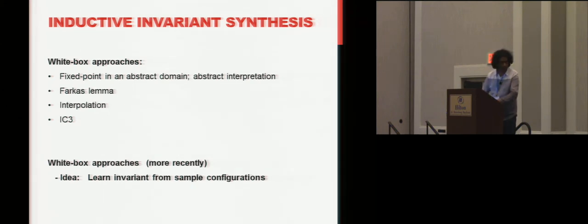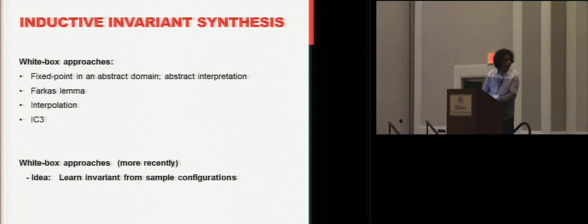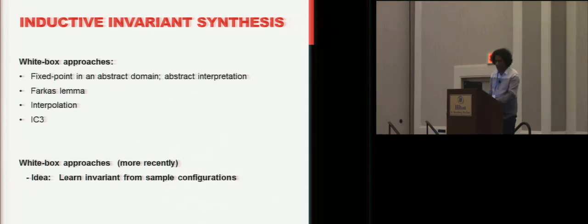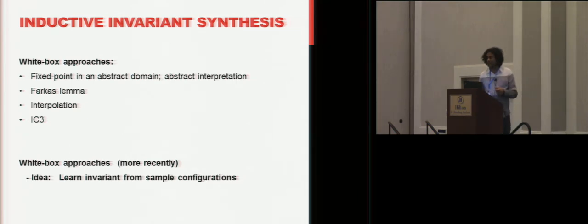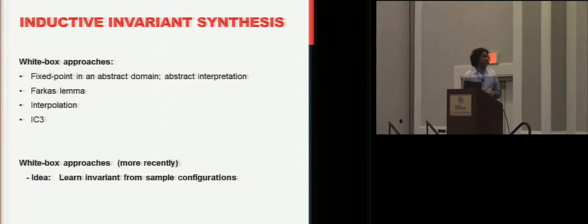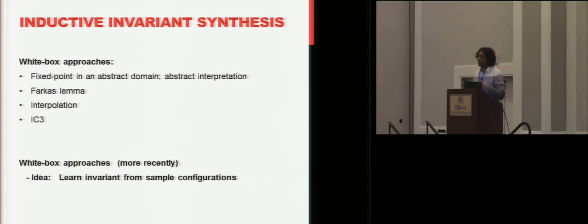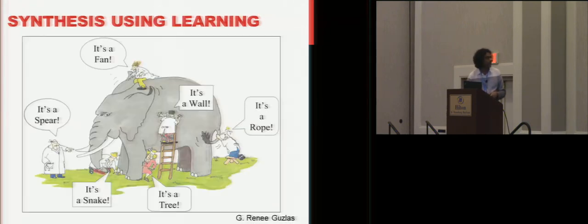The traditional approaches for doing this are white-box approaches, which look at the actual program. There are many approaches: abstract interpretation, Farkas lemma-based approaches, interpolation, IC3, and so on. But the one I'm going to concentrate on is black-box approaches, which have been explored more recently, and the idea is to learn the invariant not from the program itself, but from samples that you derive from the program.